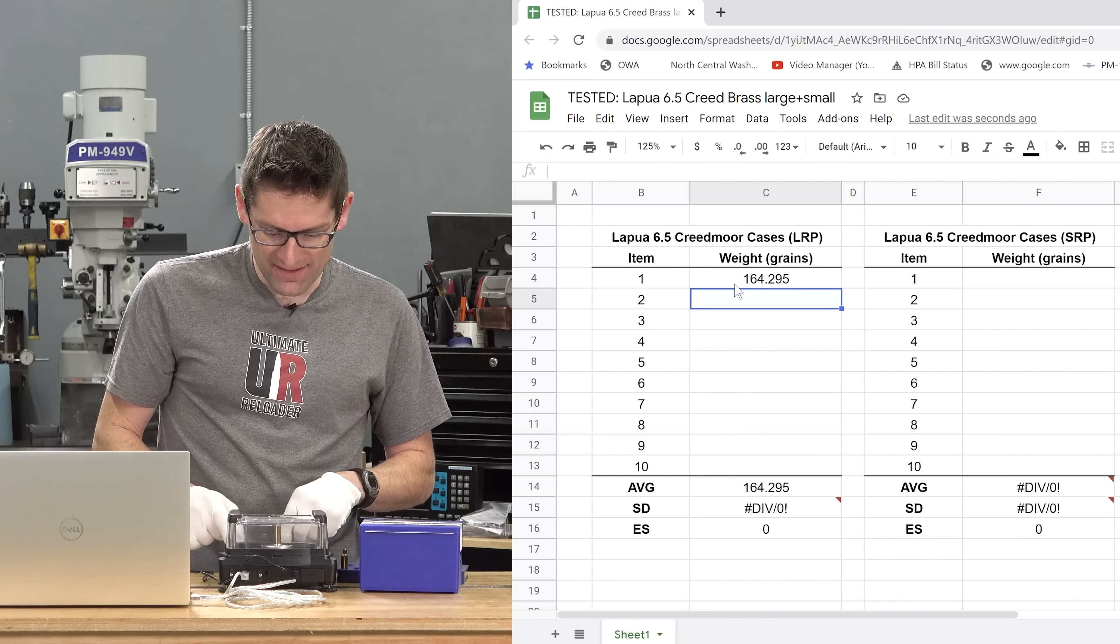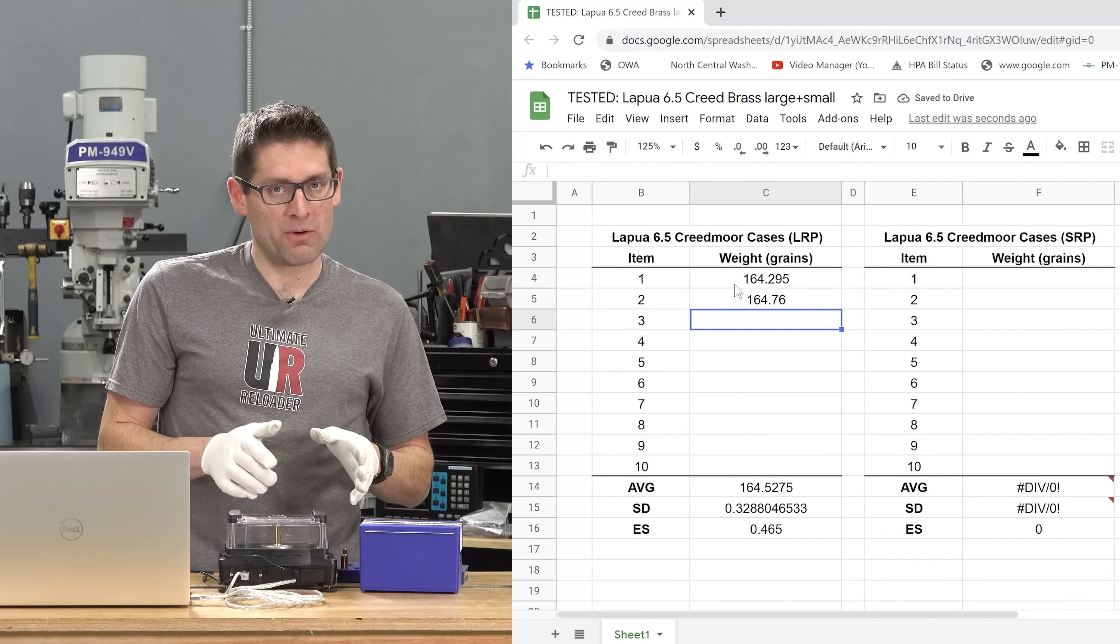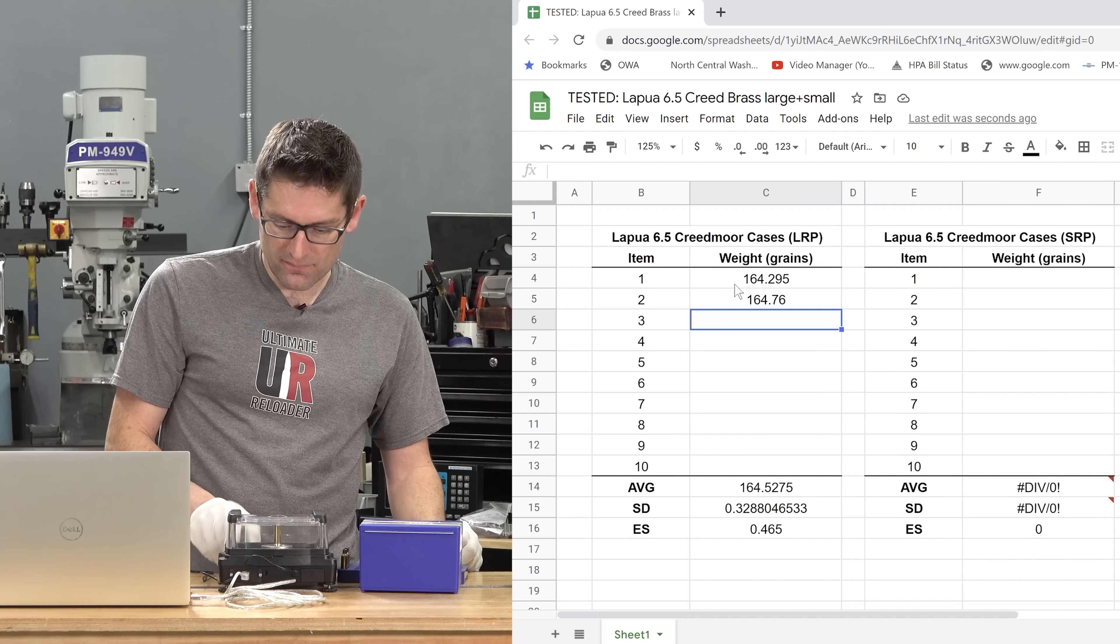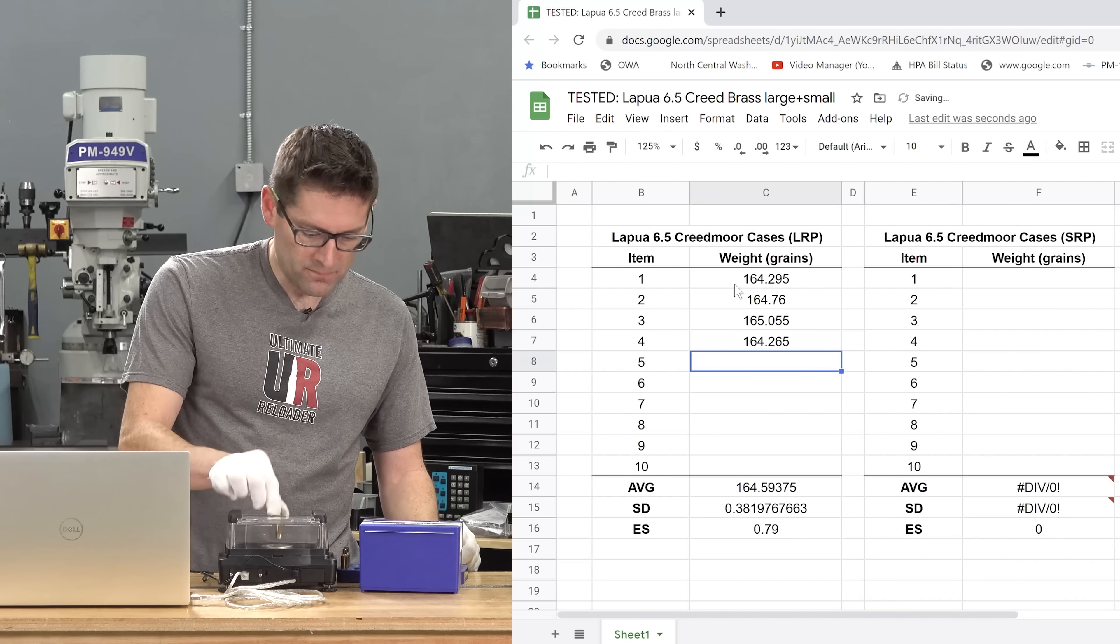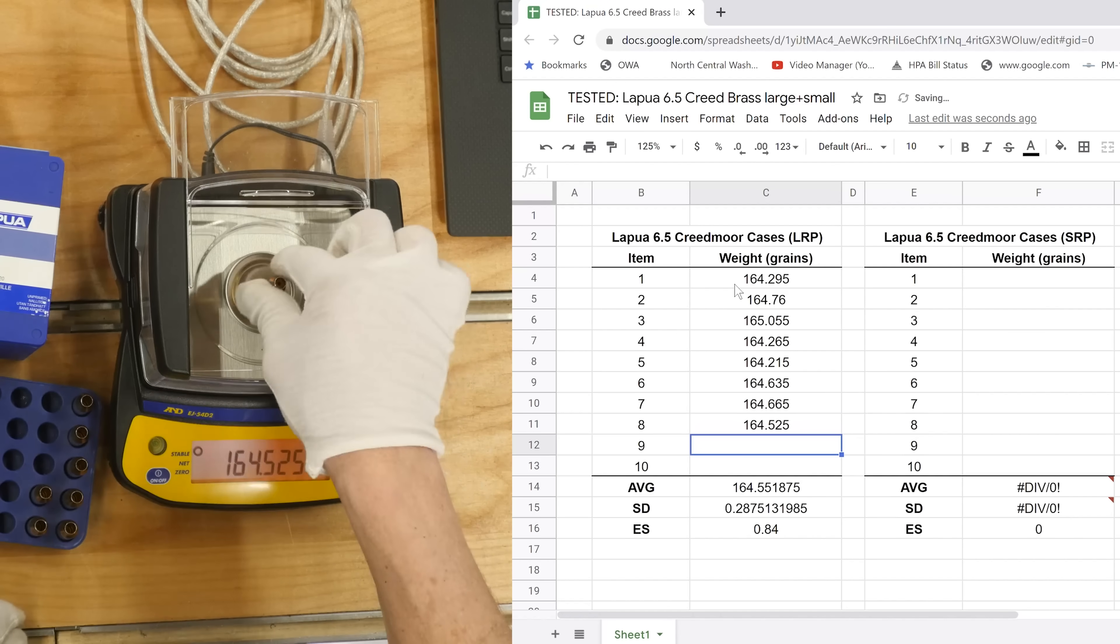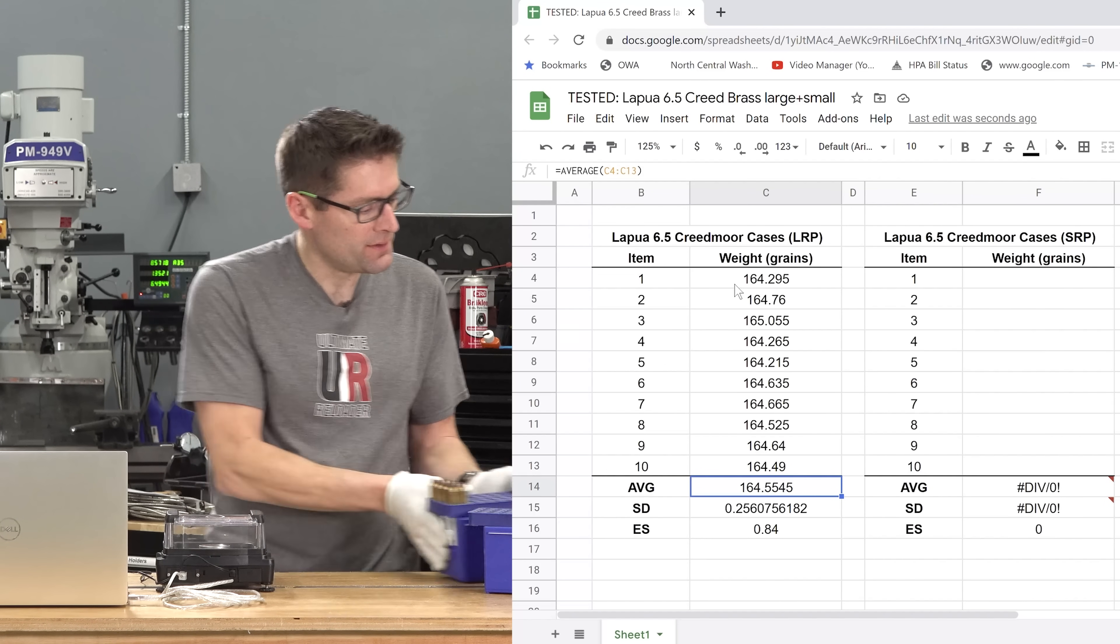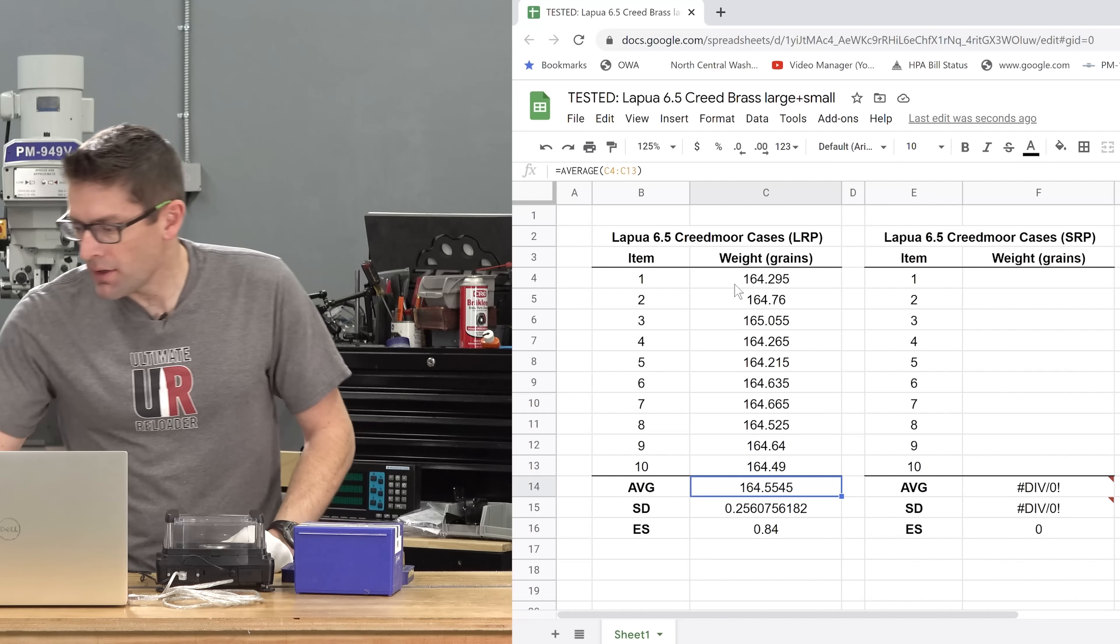I'm going to go through this process with 10 pieces of large primer pocket brass and 10 pieces of small primer pocket brass. That's it for the large primer pocket brass. Now we move over to the small primer pocket brass and repeat the process.